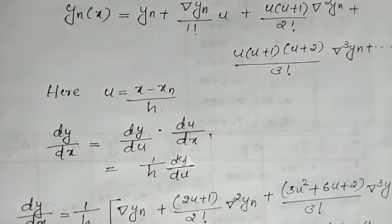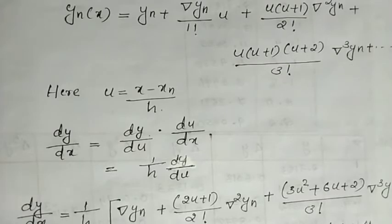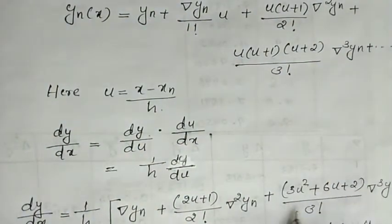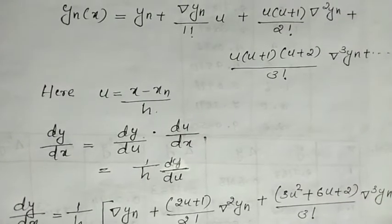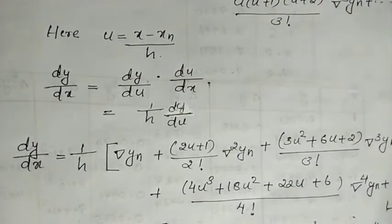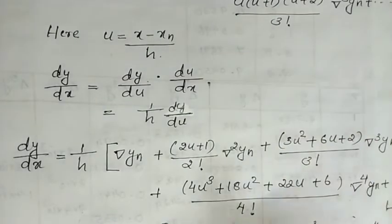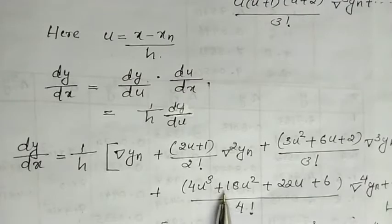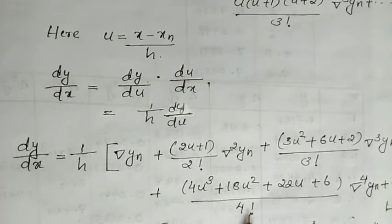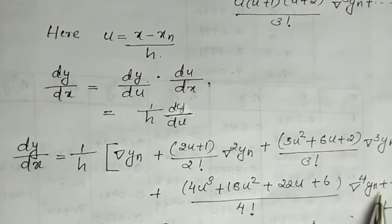Multiplying out: u cubed plus 3u squared plus 2u divided by 6 times del cube yn. Taking the derivative: 3u squared plus 6u plus 2 divided by 3 factorial times del cube yn. Plus u(u+1)(u+2)(u+3) divided by 4 factorial times del to the 4th yn. Expanding: u squared plus u cubed plus 18u squared plus 22u plus 6 divided by 4 factorial times del raise to 4 yn, plus etc.